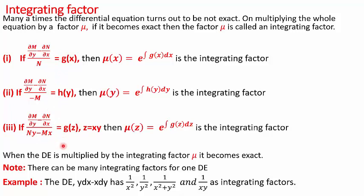We have three different cases. In Case 1: if the difference del M by del y minus del N by del x, when divided by N, gives only terms of x — that is, a function of x, denoted g(x) — then the integrating factor mu(x) is found using the formula e to the power of the integral of g(x) dx. Once mu(x) is found, we multiply the non-exact differential equation by mu(x), making it exact, and then proceed to finding the solution.